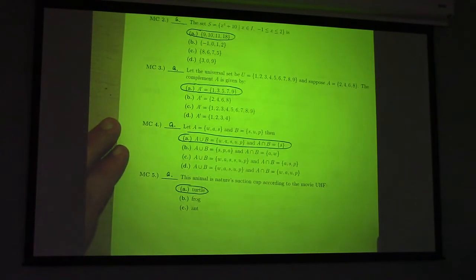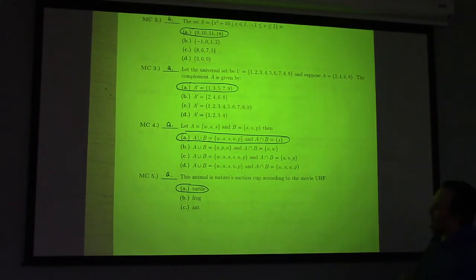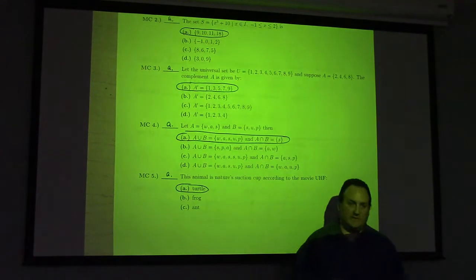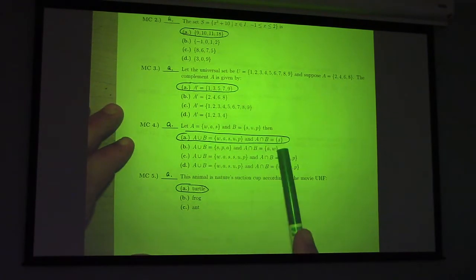But problem 4, you have A is WAS, and B is SUP. And so, the question was, which one of these is true, right? And so, if we intersect them, the only thing that's common to both is just what? The thing that's common to both is S.